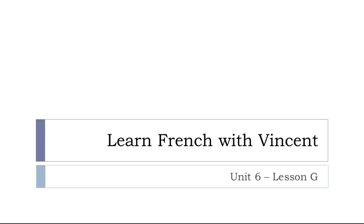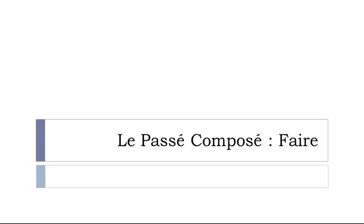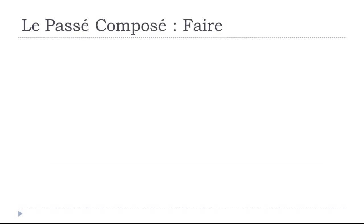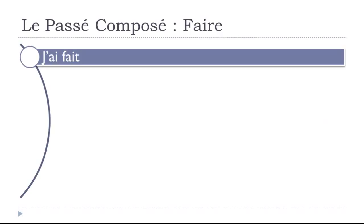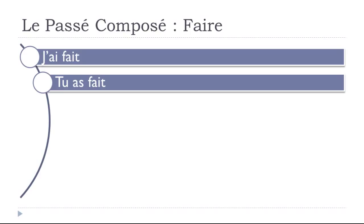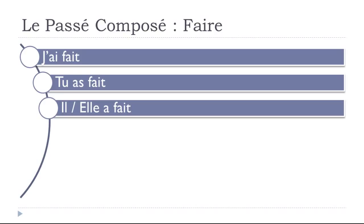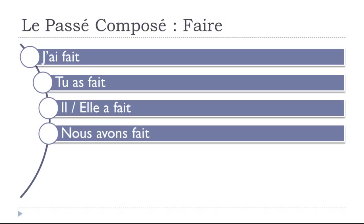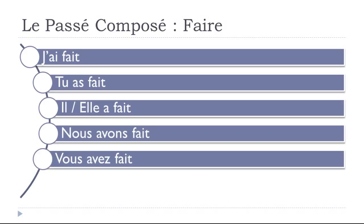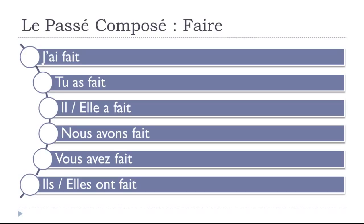Bonjour à tous and welcome to Learn French with Vincent. This is Unité 6, Leçon G. We'll see le passé composé of the verb faire — to do. We introduced the passé composé in Unit 5. Let's see: j'ai fait, tu as fait, il a fait, elle a fait, nous avons fait, vous avez fait, ils ont fait, elles ont fait.